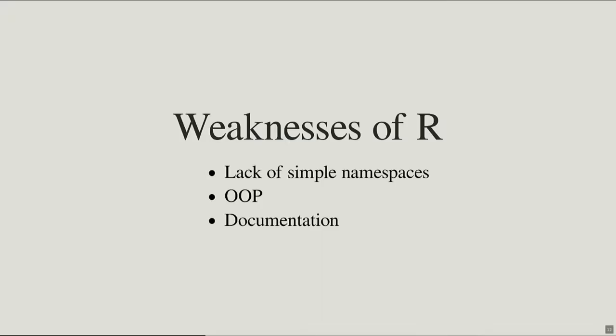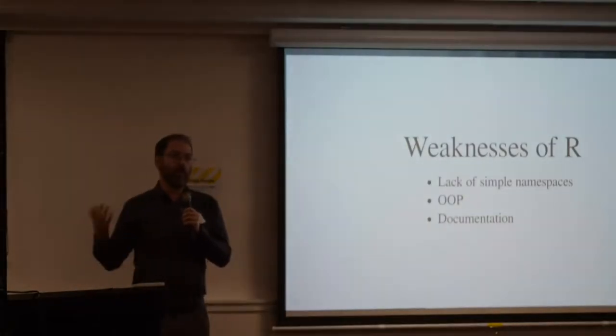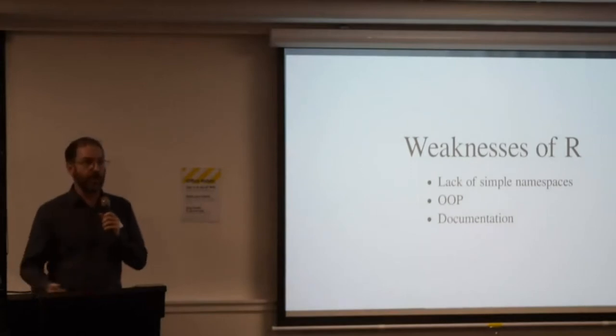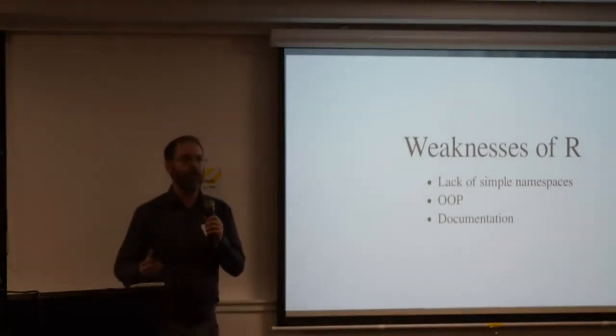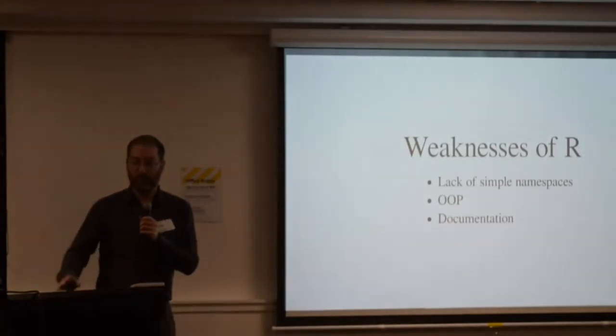Some of the weaknesses of R: namespaces are a bit of a pain to work with. Object-oriented programming is not its strength — it's more functional programming; you can do OOP but it's not the best. Documentation, compared to languages like Python, tends to have some holes, though it's getting better.